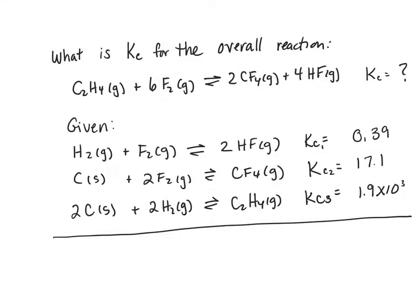So in this problem, we want to find the equilibrium constant for the overall reaction C2H4 plus 6F2 in equilibrium with 2CF4 plus 4HF, all of those in the gas phase. So we're looking for Kc for that.